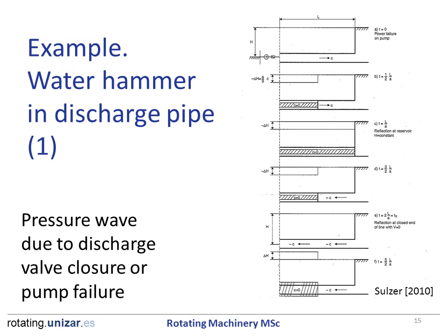This is an example of the pressure wave induced by a sudden closure of the discharge valve or a pump failure. At A, you can see the initial condition — the pump is pumping a liquid to the reservoir. After the valve is closed, the fluid stops and a depression is formed which travels downstream (diagram B). The wave reaches the reservoir (C) and reflects back to the pipe, inducing a negative velocity and restoring the pressure (D). When this wave arrives again to the valve (E), the fluid is stopped and a new pressure wave is propagated downstream (F).